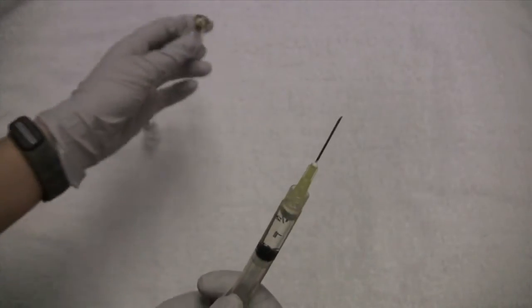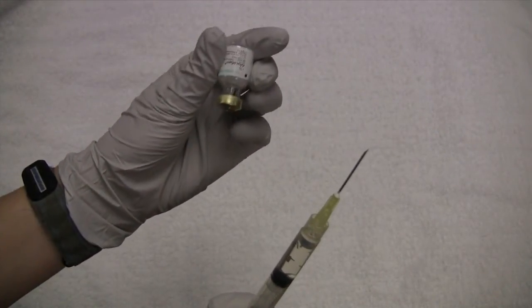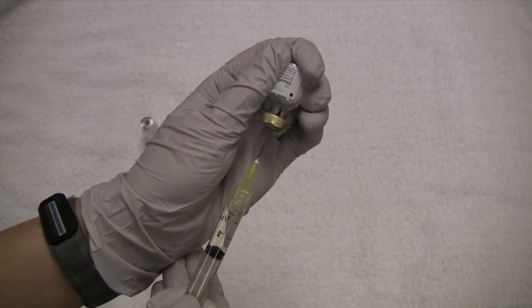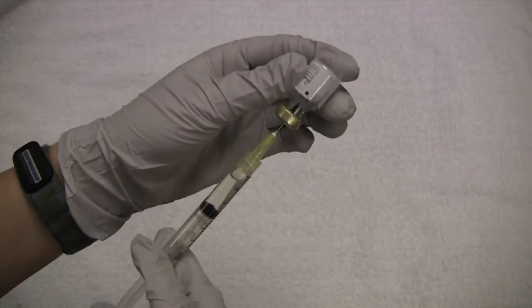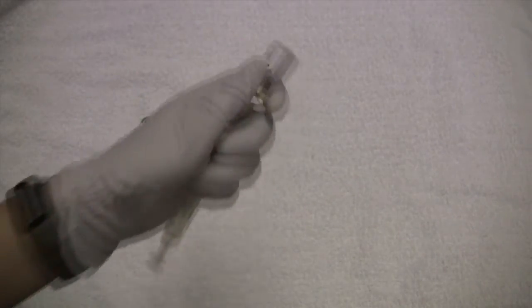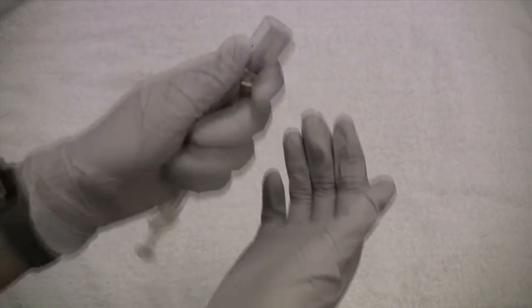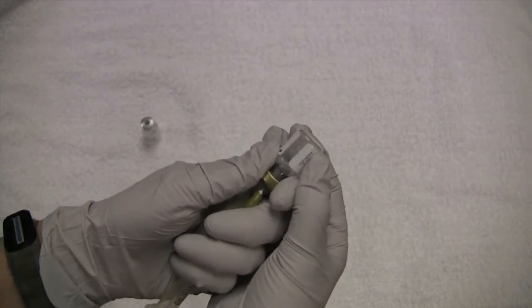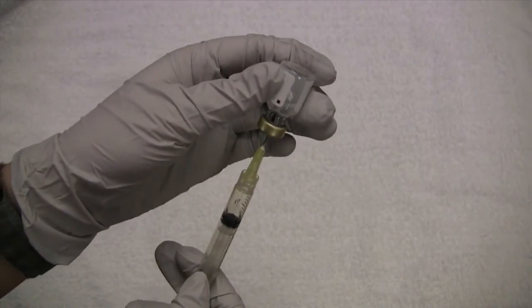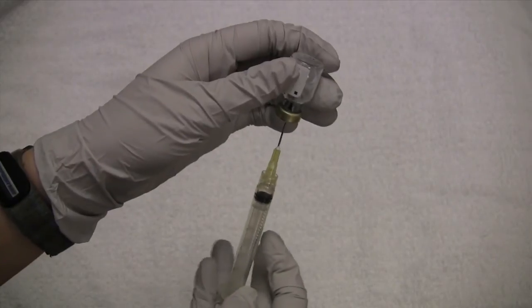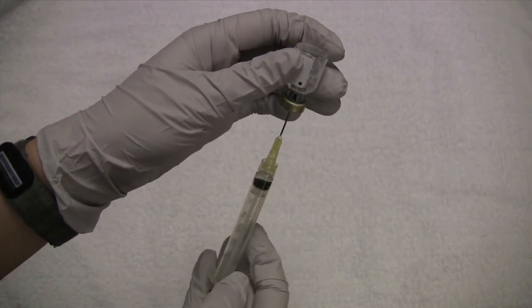Now I'm going to grab my glucagon and put the sterile water in the vial. Next we shake it up and it's pretty good at diluting pretty quickly. You can double check, make sure you don't see any powdered marks, and then draw up the medication.